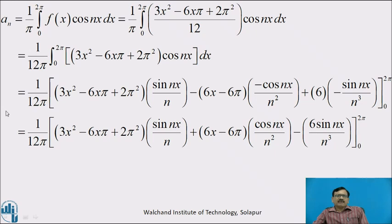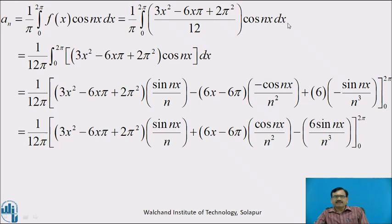Now we calculate aₙ. aₙ = (1/π)∫₀²π f(x)cos nx dx = (1/π)∫₀²π [(3x² − 6xπ + 2π²)/12] cos nx dx. Taking 12 outside: (1/12π)∫₀²π (3x² − 6xπ + 2π²) cos nx dx.